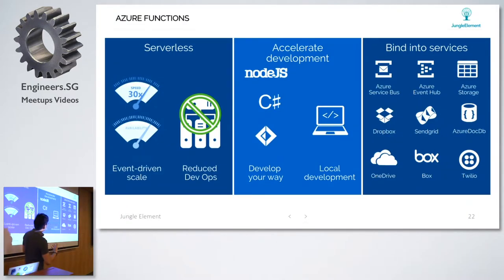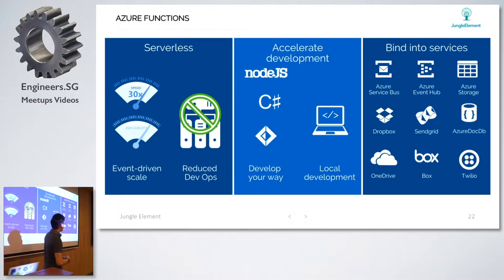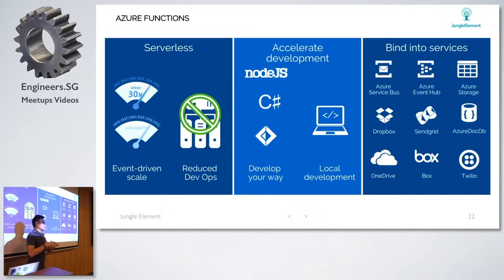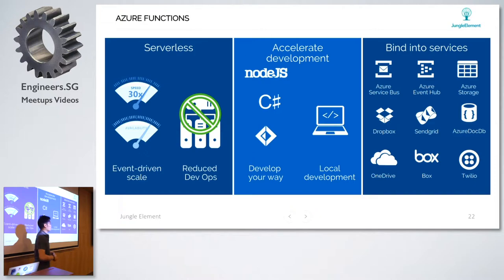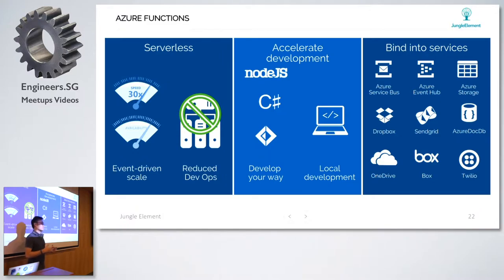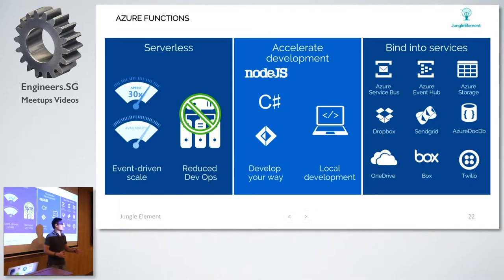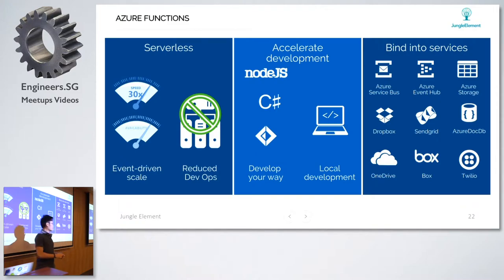Azure Function accelerates your development with different languages, whether locally or on the cloud. You can bind that service into different service providers - Dropbox, SendGrid, Twilio, OneDrive. Azure Function does more than just get an input and turn it to an output - you can turn that output to services you already know and want to use. Some use cases help you build scalable architecture and scalable applications on top of serverless architecture where things are more flexible and scalable.